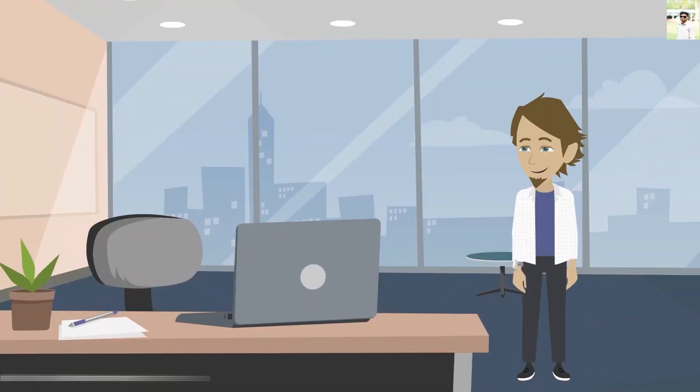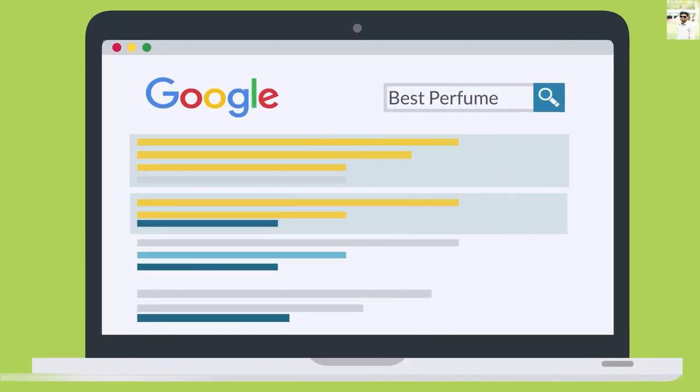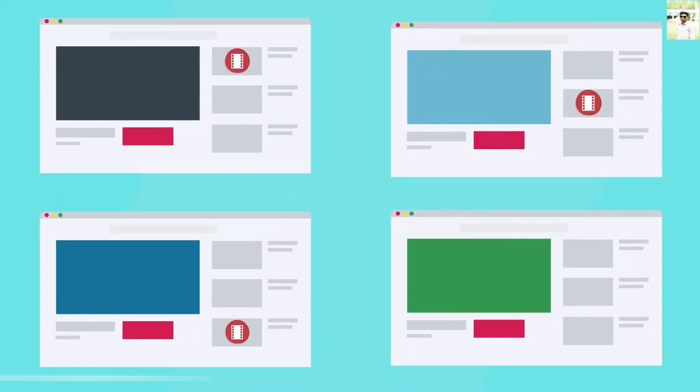So while waiting for SEO to work, John can explore other channels like PPC advertising. With PPC advertising, John can show his ads on top of the Google search results and in the thousands of websites that participate in the Google advertising network.